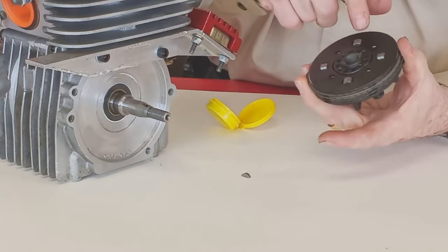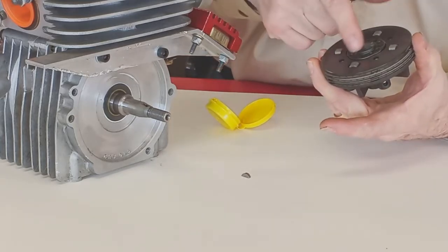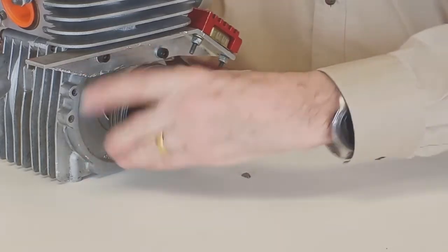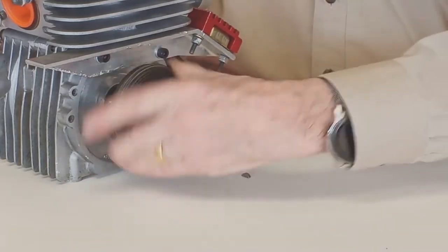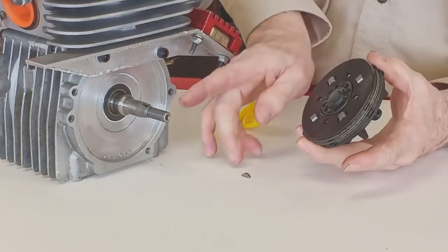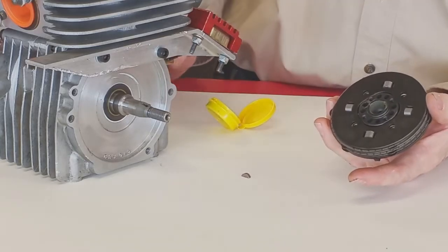Periodically stop, push the valve grinding compound that came out back into the hole, put it back on, and grind some more. When you're done, the taper on the crankshaft should be dull gray and the inside of the clutch should be dull gray as well.